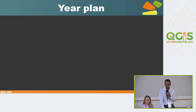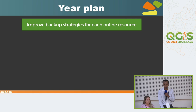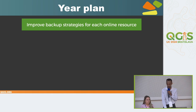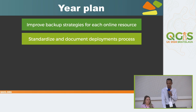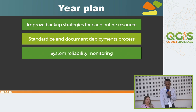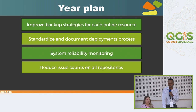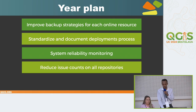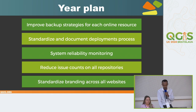Let's look at my work plan and goals for this role. My first goal is to ensure that each online resource and server has a proper backup strategy. The second goal is to standardize the deployment process for each website, along with clear documentation. The third goal is to implement automatic monitoring tools for each server and website for system availability and monitoring. The fourth goal is to work on all open issues on each repository and reduce them as much as possible. The fifth goal is to standardize the branding across our websites.